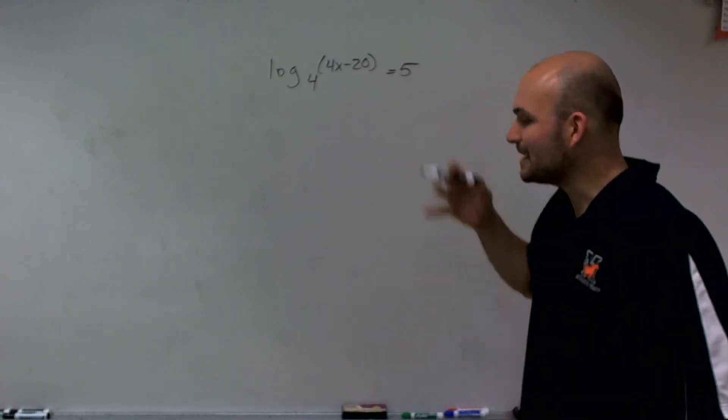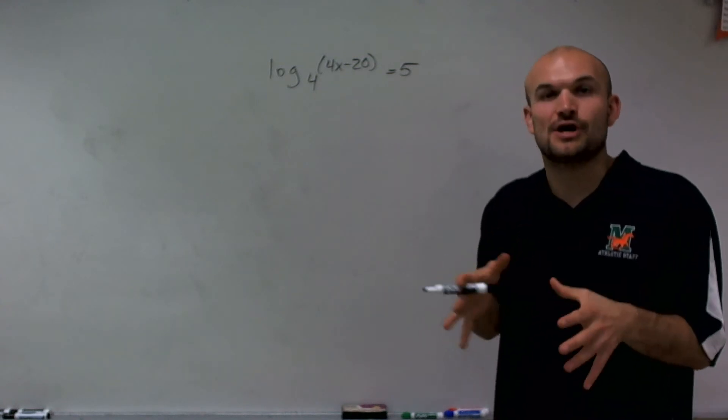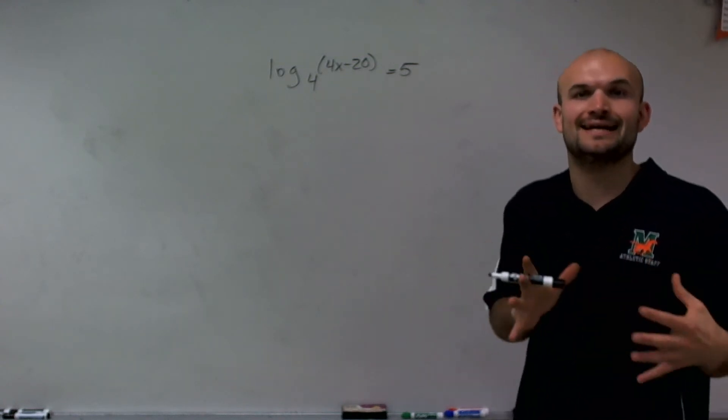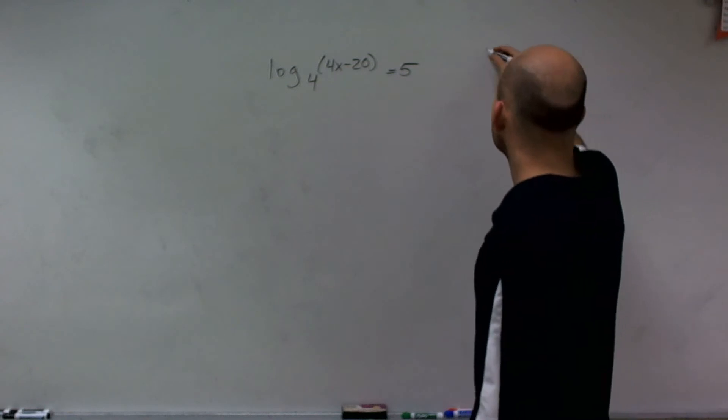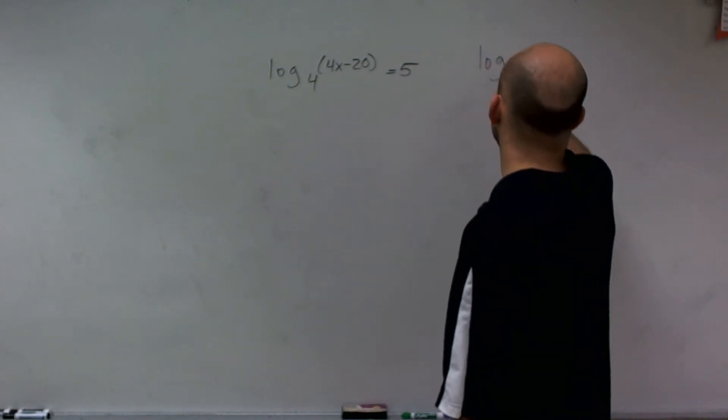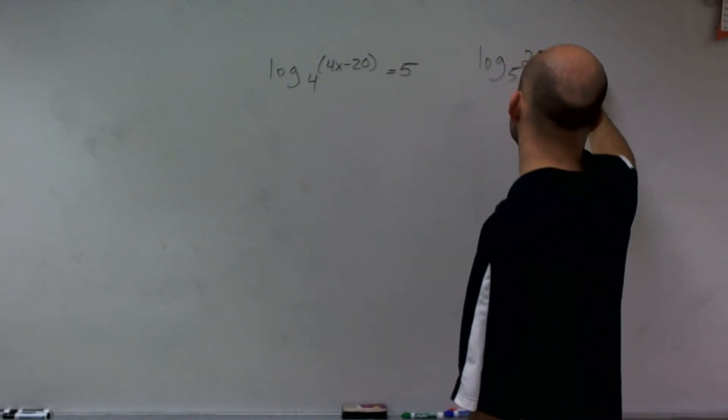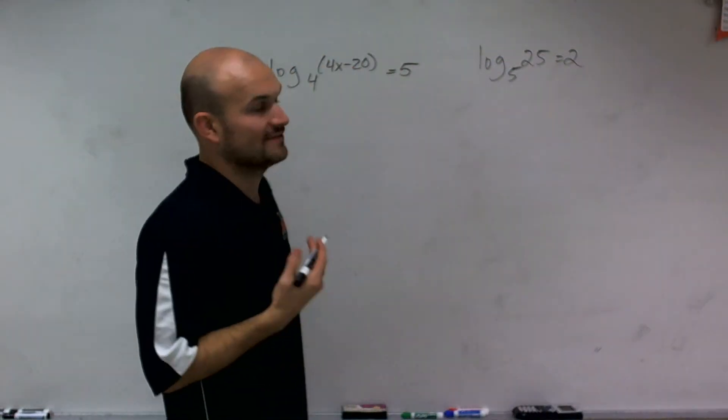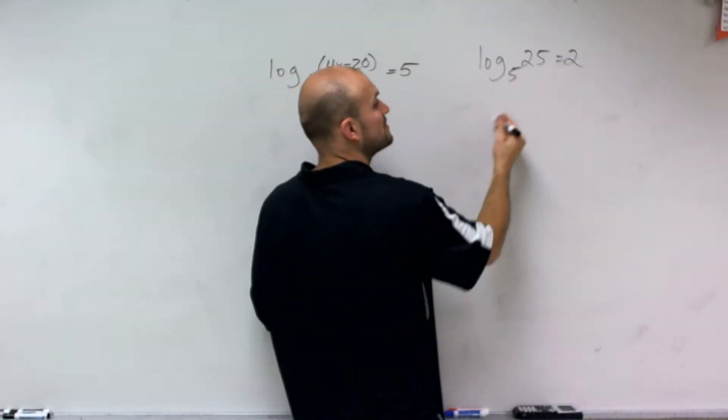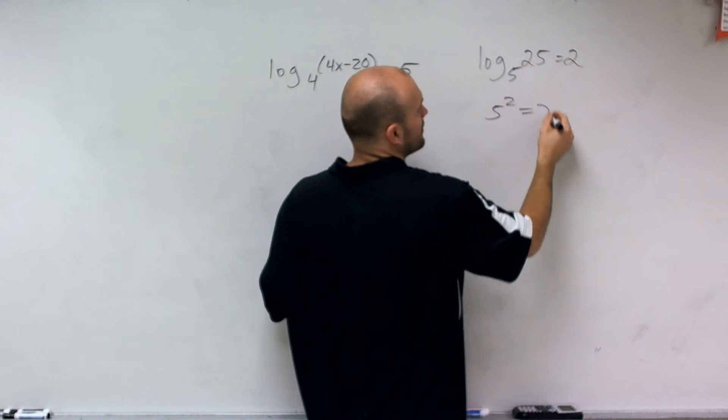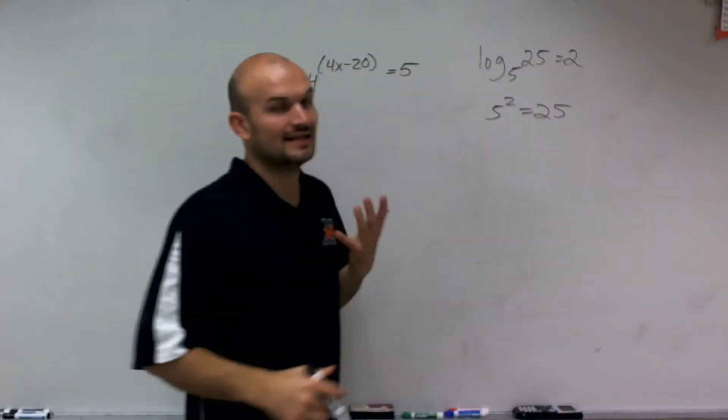So when looking at a logarithm, I think it's easiest to start off with understanding a logarithm by looking at it in exponential form. So let's look at a logarithm that we know what the exact answer is. If I had log base 5 of 25 equals 2, the reason being is if I was to rewrite this in exponential form, we could say that 5 squared equals 25.